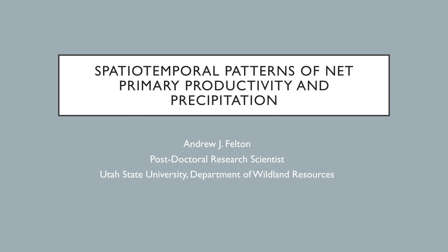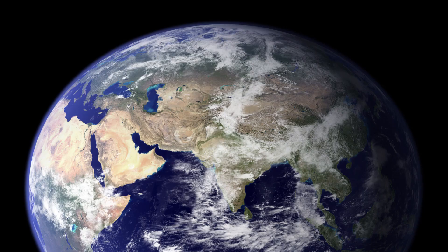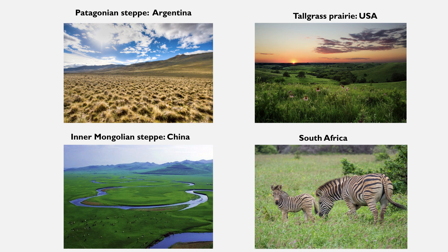I'm going to talk a little more in depth about these patterns of net primary productivity and precipitation that we see in both space and time. Starting big picture, when we think about the land surface and the types of ecosystems that comprise it, over 40% of the land surface is what we would consider water-limited dryland ecosystems. These systems come in a diversity of forms and as a consequence support significant levels of biodiversity.